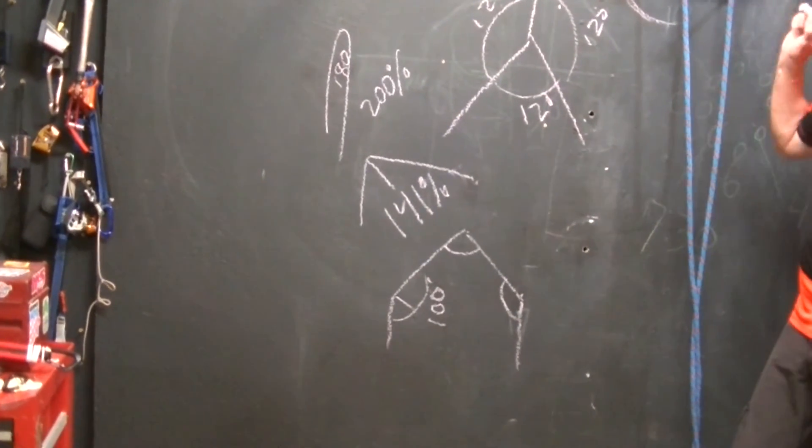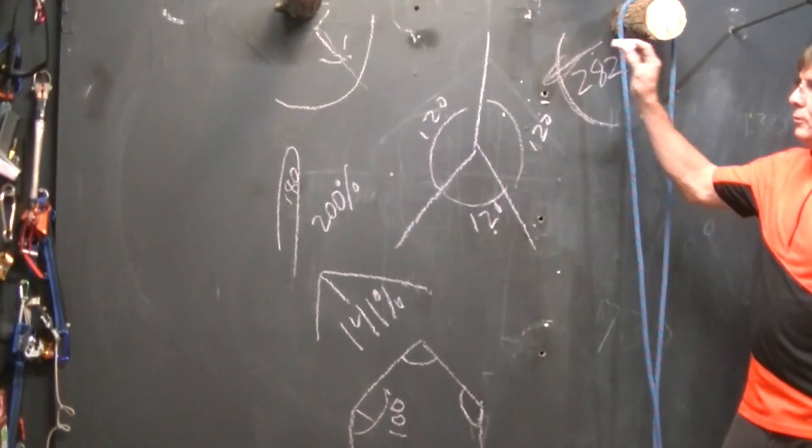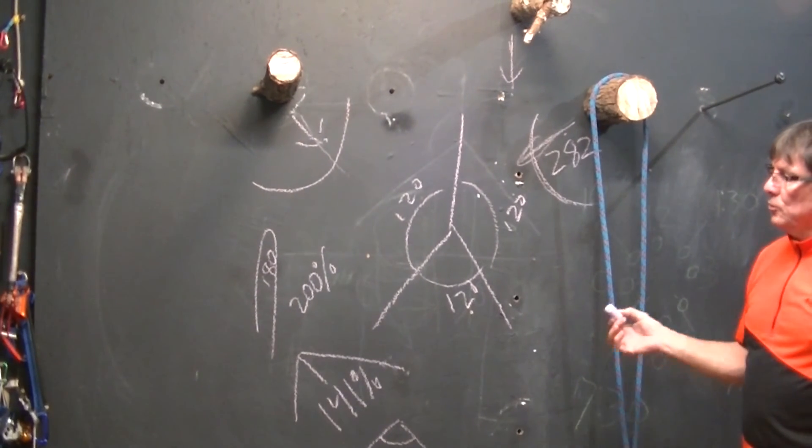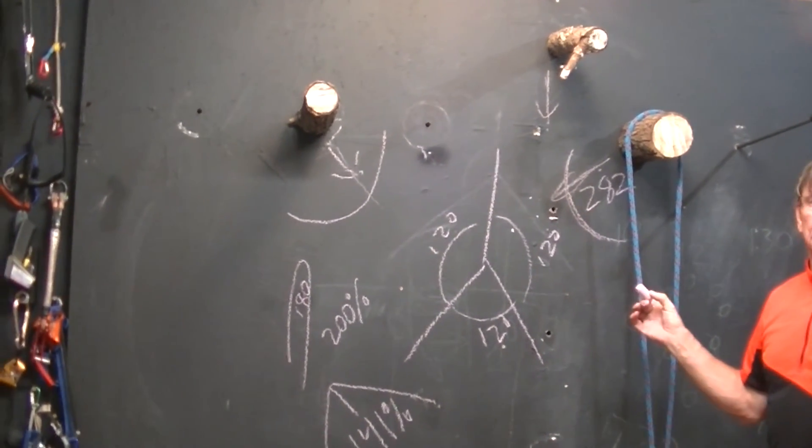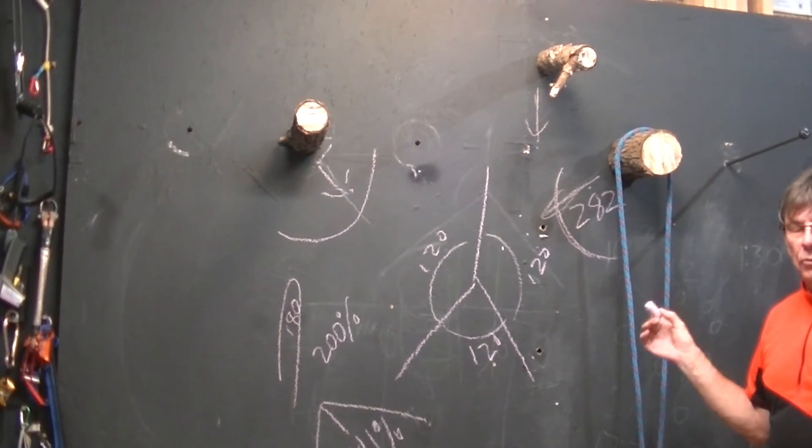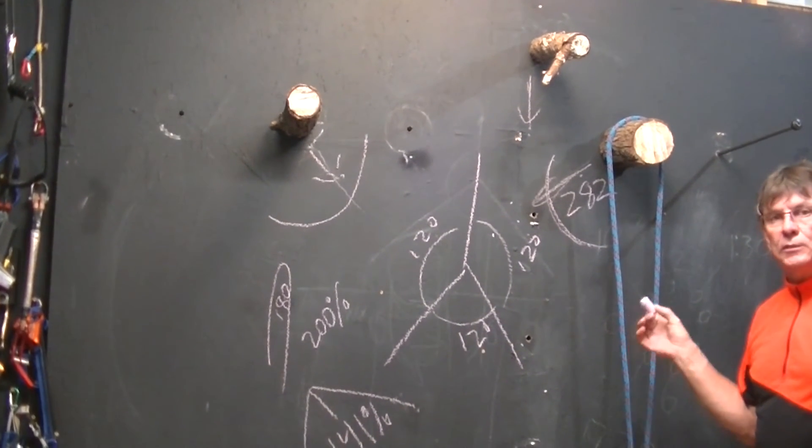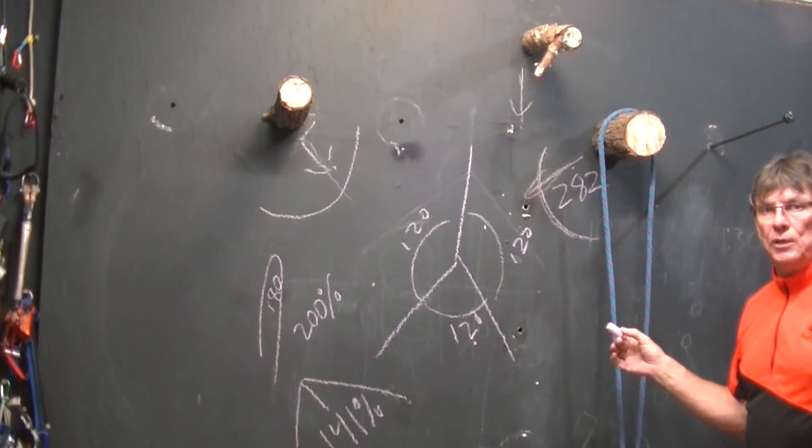So, those are some considerations when you're threading your redirects, and you're building your anchors, and you're putting your line through the tree, and you're thinking that you're sharing the load, and you are, but you're actually increasing the load at some of those anchors.